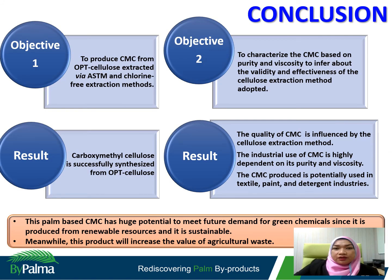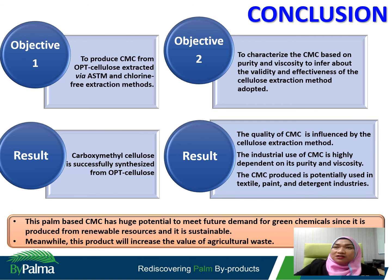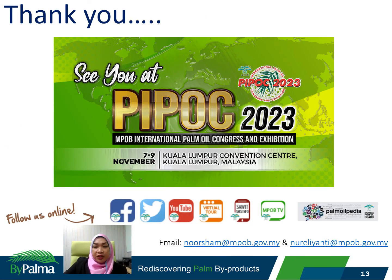In conclusion, CMC was successfully synthesized from OPT cellulose extracted by two different methods: the chlorine-free method and the ASTM method. The quality of CMC is influenced by the cellulose extraction method, and the industrial use of CMC is highly dependent on its purity and viscosity. The CMC produced is potentially suitable for use in textile, paint, and leather industries. This OPT-based CMC has huge potential to meet the future demand for green chemicals, since it is produced from renewable resources and is sustainable. Furthermore, this product will increase the value of agricultural waste. Thank you for your attention.